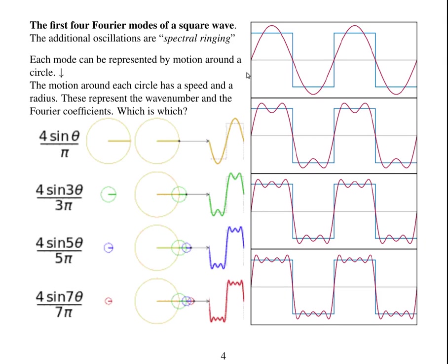Here are the first four Fourier modes of a square wave. Fourier series are not only used to represent continuous functions; they can also be used to represent functions with discontinuities. However, as you add more modes it does get closer, but you will always get oscillations around the discontinuity, which is referred to as spectral ringing.